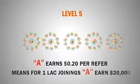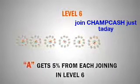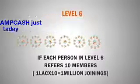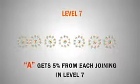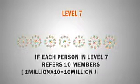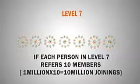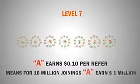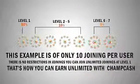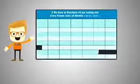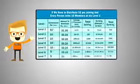You will earn 20,000 dollars from level 5. At level 6, you will receive 5 percent commission from referrals — there will be 1 million joinings at level 6 if every referral refers 10 people, and you can earn 1 lakh dollars from level 6. At level 7, you will earn 5 percent commission with 10 million joinings, so you can earn 1 million dollars from the 7th level. This example is only of 10 joinings per person — everyone can join unlimited friends and earn unlimited.